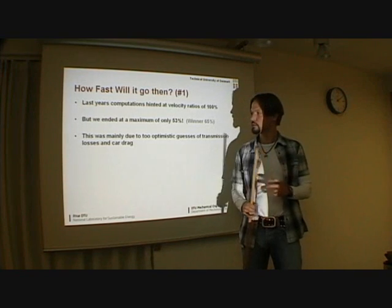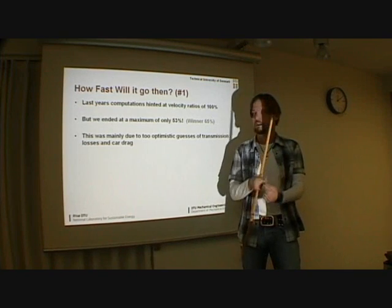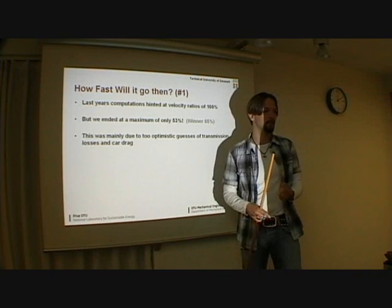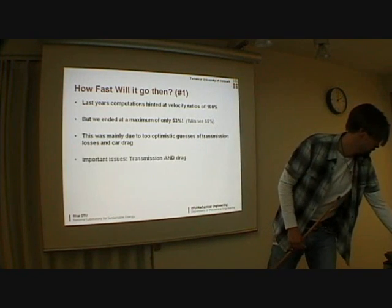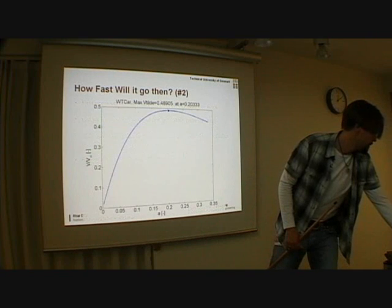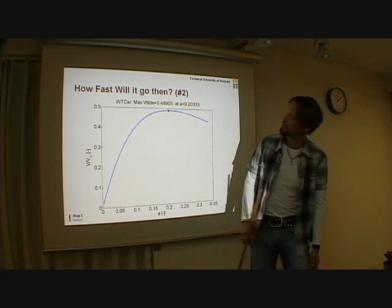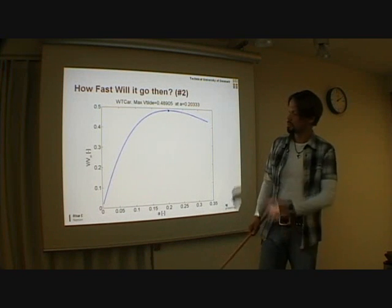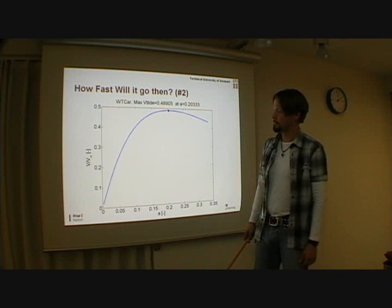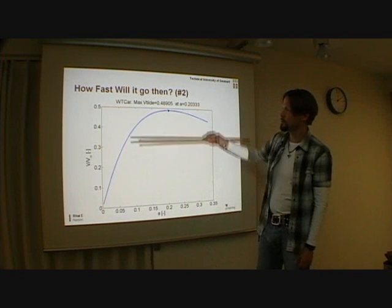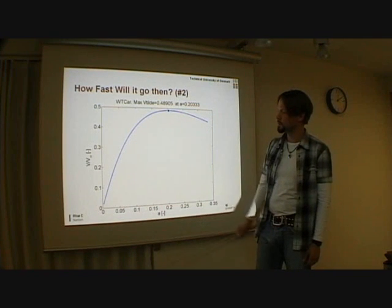When you fiddle around with the numbers and do it in the computer, you can say that if we got car drag in half and transmission losses in half, actually we would go from 53 to 100%. So that was actually what we were aiming at this year. This is actually for the wind car last year, roughly the parameters like we have computed them. It corresponded pretty well to a velocity ratio of 0.5, this is at 10 meters per second, and this is the actual induction. The best actual induction for our car is around 0.2.